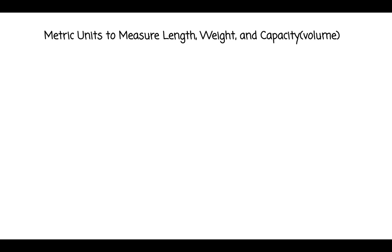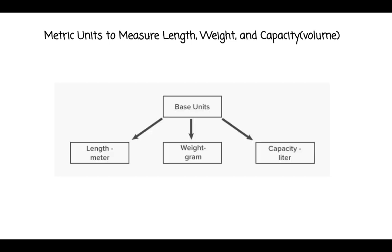Metric units can measure length, weight, and capacity — these are all different things we can measure or weigh, and they have different metric unit names. Our base units are: meter for measuring length or distance, gram for measuring someone's weight or mass, and liter for measuring liquid volume or capacity.